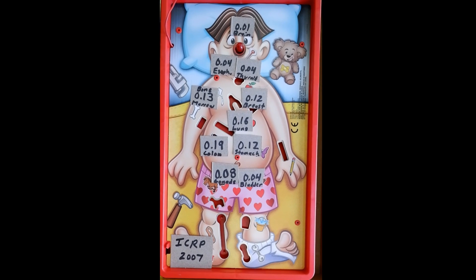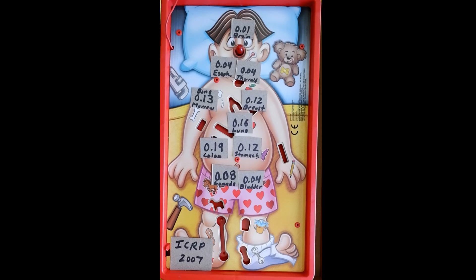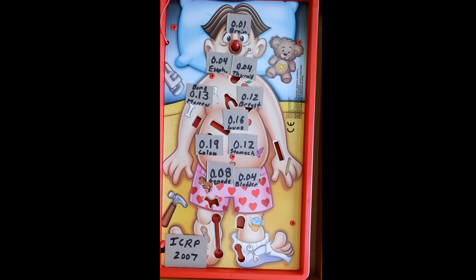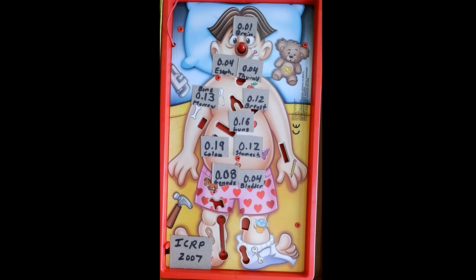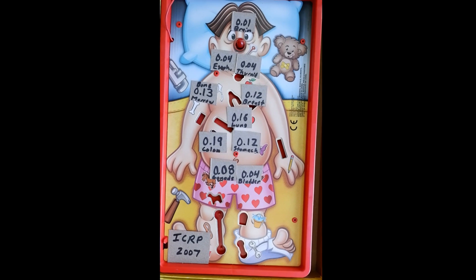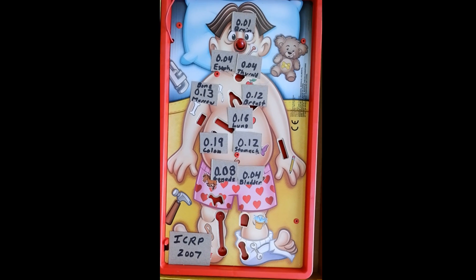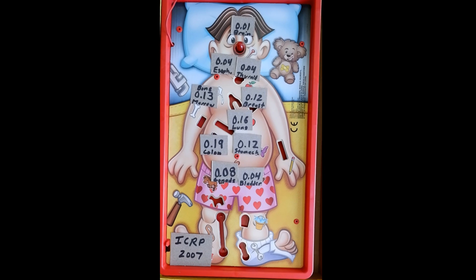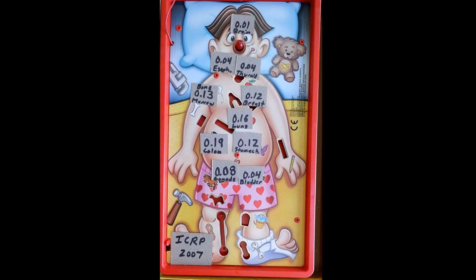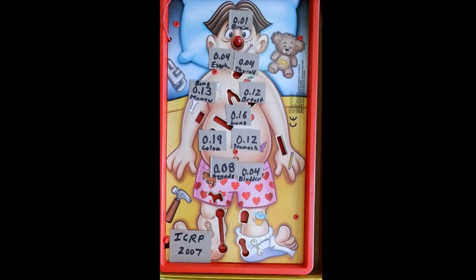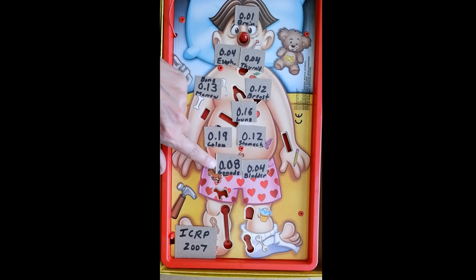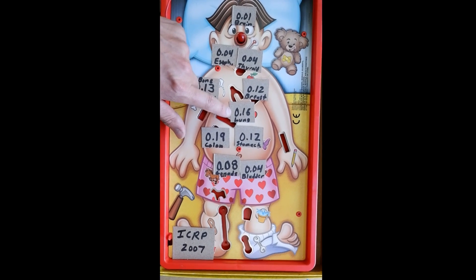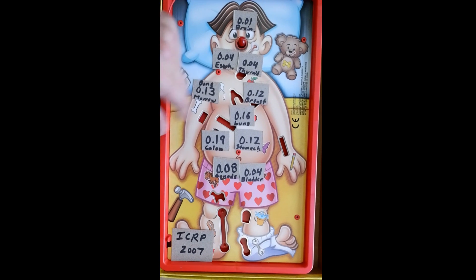So here's the idea of the radiation weighting factors. For each body part, we're going to give it a weight that's between zero and one, and these factors are going to add up to one. The regions of the body that are more radiosensitive will have higher weights.